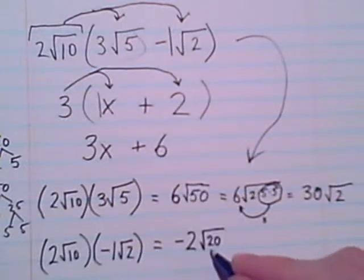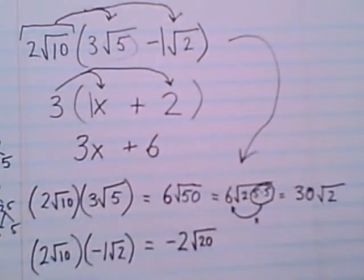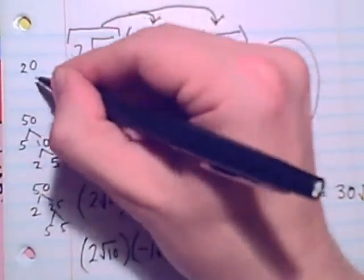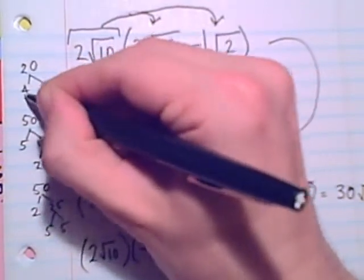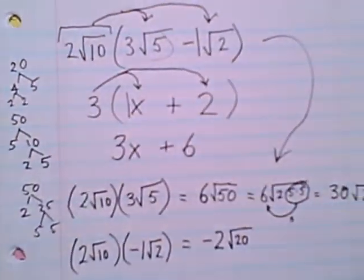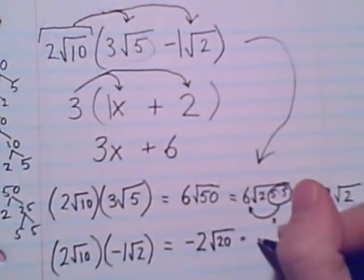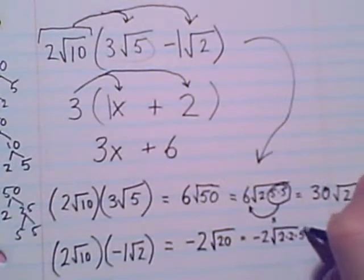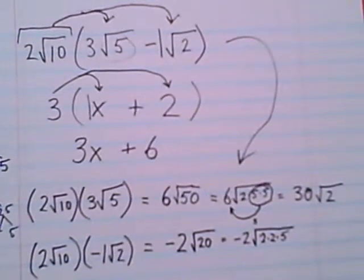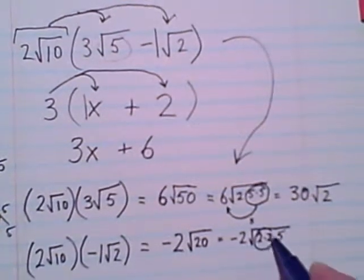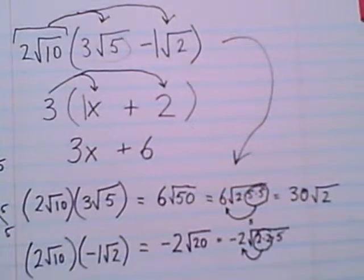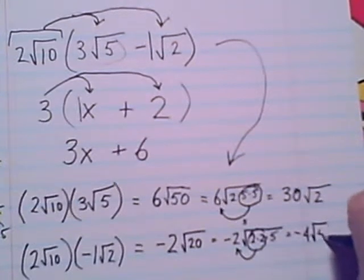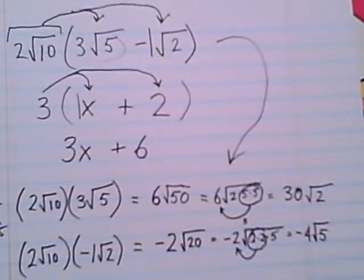We can simplify this radical. Our 20 is, let's make the tree. Let's make it up high. 4 times 5. That's 2 times 2 times 5. You do a few of these and you start to have to make fewer and fewer trees. But as long as it's helpful, I'll make it. 2 times 2 times 5. I'm seeing that pair, a pair of 2's that I'll bring out and multiply to our number out front. So I have negative 4, radical 5. So that is simplified.